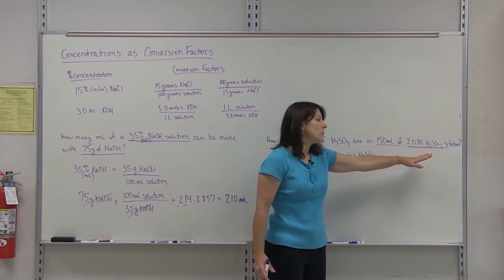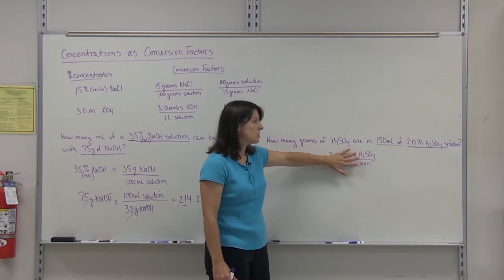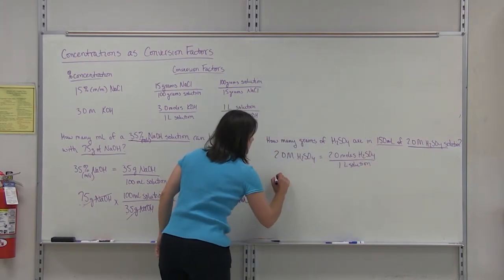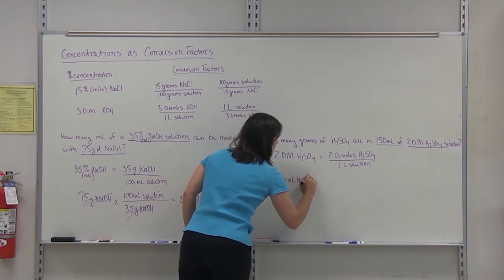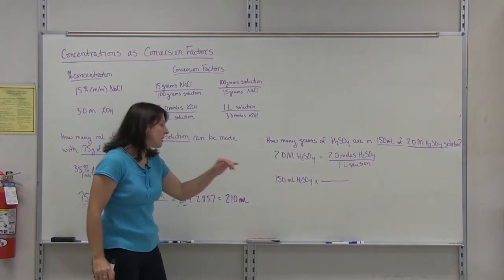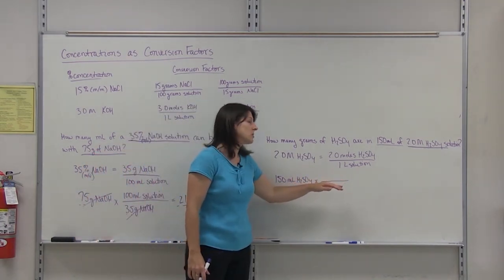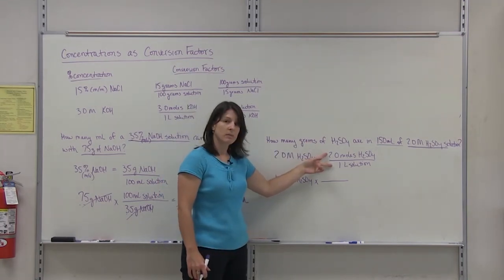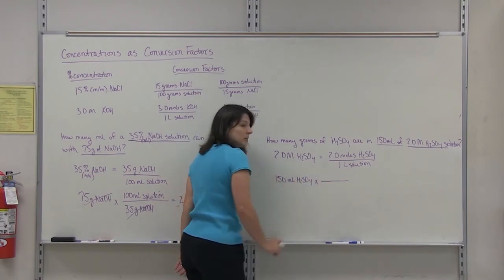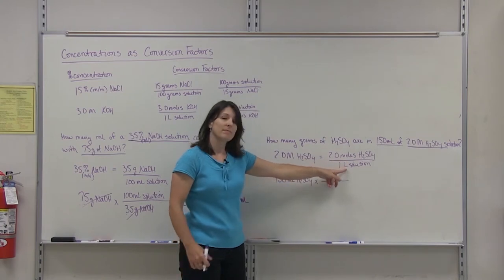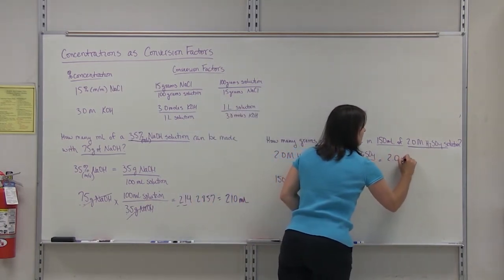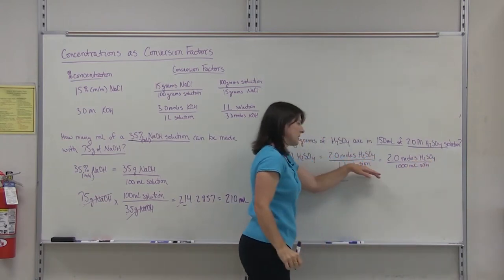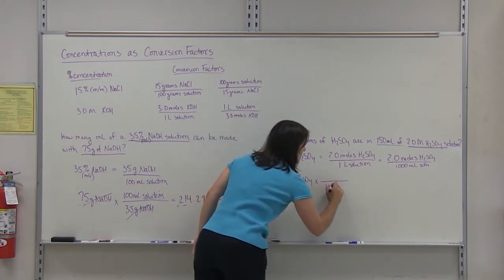Of your two numbers, you have to pick which one to start your math problem with. My rule is: don't start with a fraction — we're going to use the 2 molar as a conversion factor. So I'm going to start with my 150 milliliters of H₂SO₄ solution. I need to convert my volume to moles. This fraction has liters in it, but you can convert: 2 moles of H₂SO₄ in every 1000 milliliters of solution, because a liter is equivalent to 1000 milliliters. I'll use it in this form.